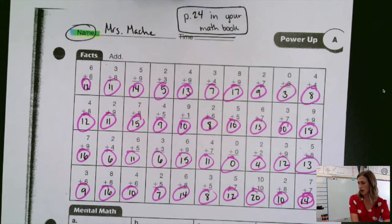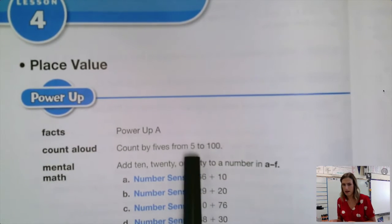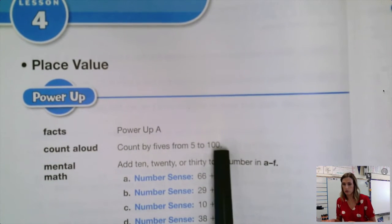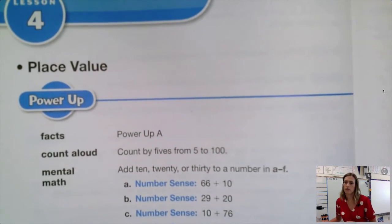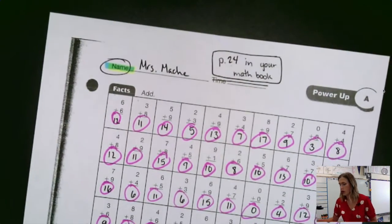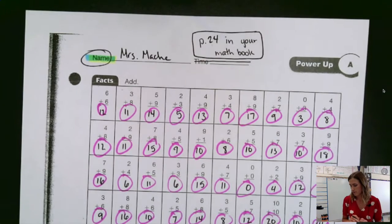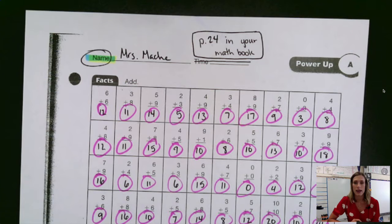Let's get going on our counting. Today it says count by fives from five to one hundred. We'll start with fives. Remember, it'll sound like this: five, ten, fifteen, twenty. Let's keep it up. Here we go: five, ten, fifteen, twenty, twenty-five, thirty, thirty-five, forty, forty-five, fifty, fifty-five, sixty, sixty-five, seventy, seventy-five, eighty, eighty-five, ninety, one hundred. Excellent. Nice job.